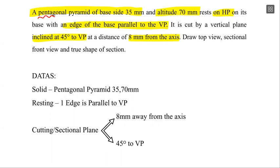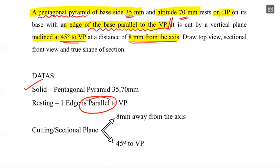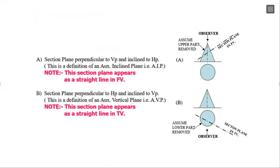Let me get into the problem. A pentagonal pyramid with 30mm side and 70mm height, resting on HP such that one of the base edges is parallel to VP. And it is cut by a plane 45 degrees to VP and 8mm away from the axis. These are the data: pentagonal pyramid, resting condition - one edge parallel to VP, and sectional plane data - 8mm away from axis, 45 degrees to VP.